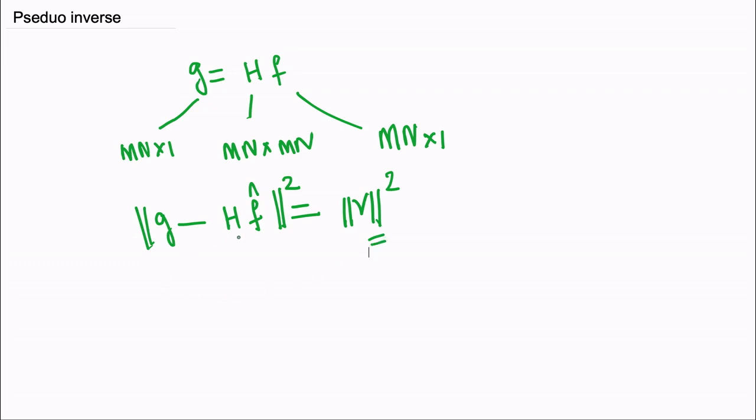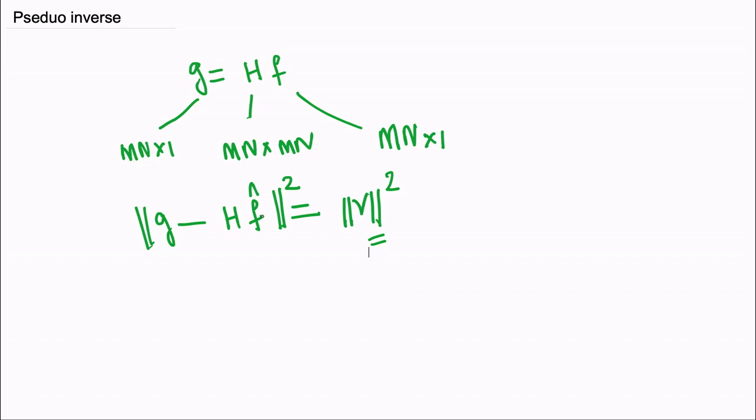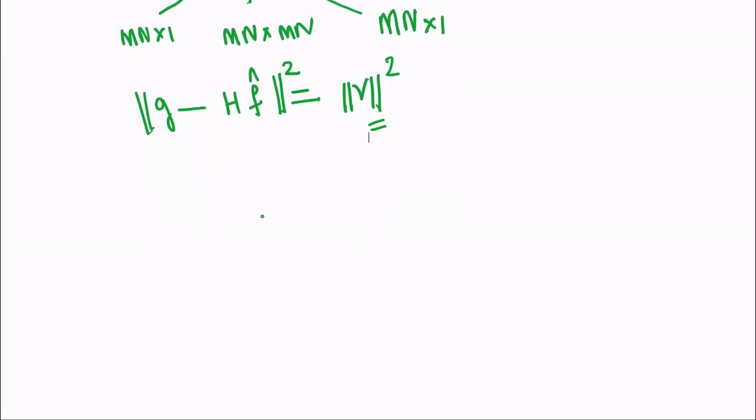Our aim is to minimize this difference so that this difference will be 0, and we will get the better restored image. One thing what we can do is this equation: g minus h f transpose g minus h f is equal to r transpose r.